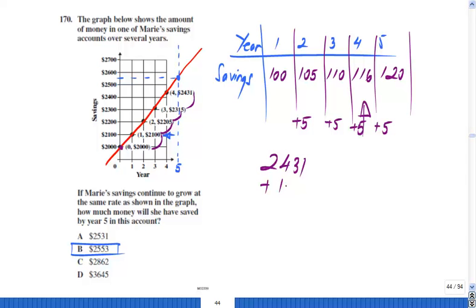And that takes you to what? $2551. The closest one to that amount is B, and this is another way which you can think and reason how to approach this problem.